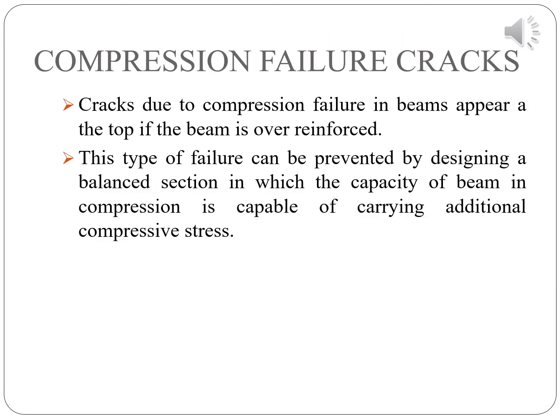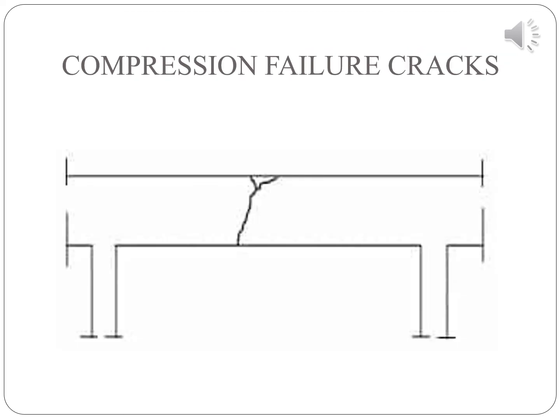The fifth type is compression failure cracks. Compression failure cracks appear at the top of the beam if the beam is over-reinforced. In case of over-reinforcement, the beam has the capacity to bear higher bending stresses, but if the top reinforcement provided is insufficient to carry the compressive stress, the top of the beam gets cracked. This type of failure can be prevented by designing a balanced section in which the capacity of the beam in compression is capable of carrying the additional compressive stress. Compression failure cracks are visible in this beam.